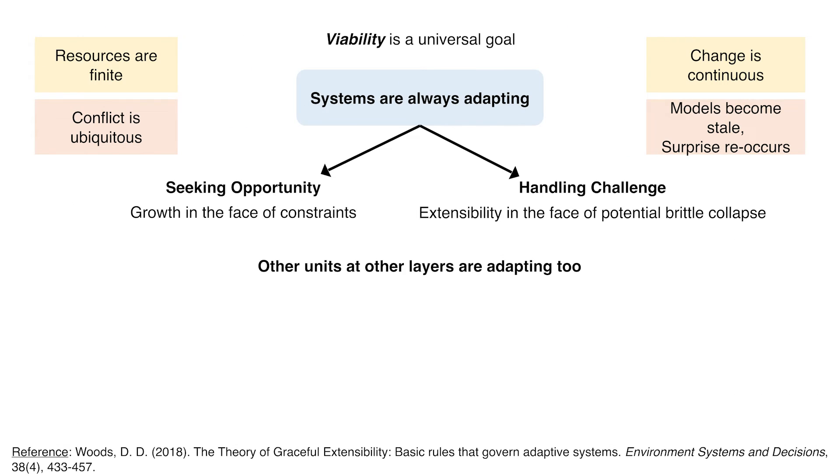There's one other thing that drives the adaptive universe. Resources are finite. Change is continuous. And the third one is that there are other players — other roles, other units at different layers as we think about the systems we are part of and actors in. We can think about those layers and the units or roles within them, and how they are adapting too. They are both seeking opportunity and developing mechanisms to handle challenge.